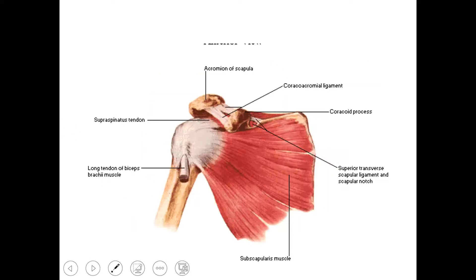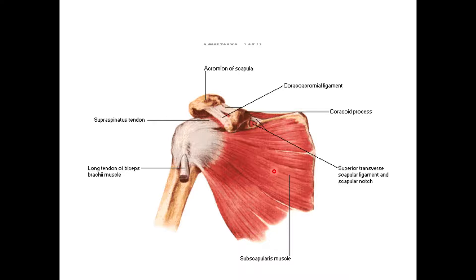The subscapularis is the muscle of the scapula that takes its origin from the subscapular fossa on the costal surface of the scapula. The medial two-thirds of the subscapular fossa give origin to the subscapularis. The muscle runs upward and laterally to reach the lesser tubercle of the humerus, which is its insertion.